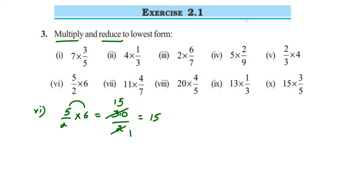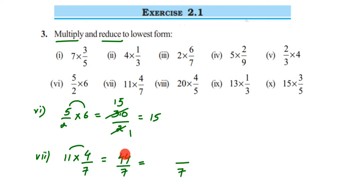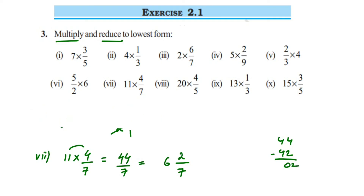The seventh question: 11 multiplied by 4/7. We cannot cancel numbers here, so 11 × 4 = 44, giving 44/7. Converting to mixed fraction: 7 × 6 = 42, which is closest to 44. Remainder is 44 − 42 = 2, so 2 will be the numerator and the answer is 6 2/7.